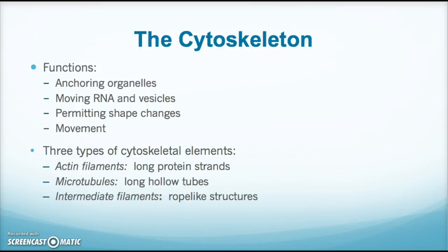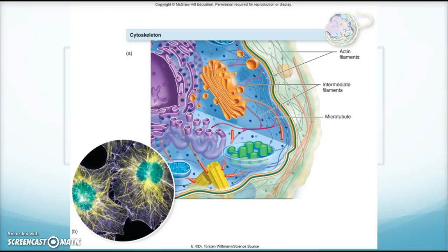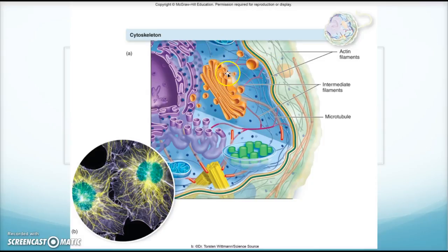The cytoskeleton has very similar functions in eukaryotic cells as in prokaryotic cells. It anchors the organelles, moves RNA and vesicles, and helps in permitting shape changes and movement. There are three types of cytoskeletal elements: actin filaments made of protein, microtubules, and intermediate filaments. Looking at this view, they form a scaffolding or framework — intermediate filaments may hold the Golgi apparatus in place, microtubules help in transport, and actin filaments are structural supports maintaining cell shape.